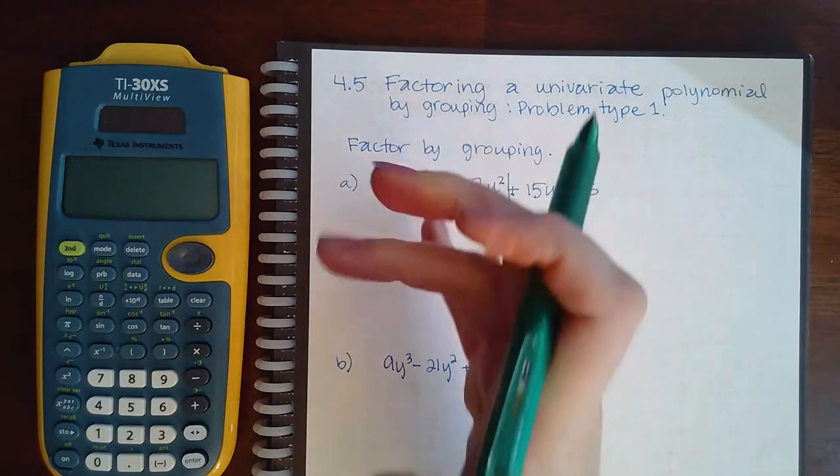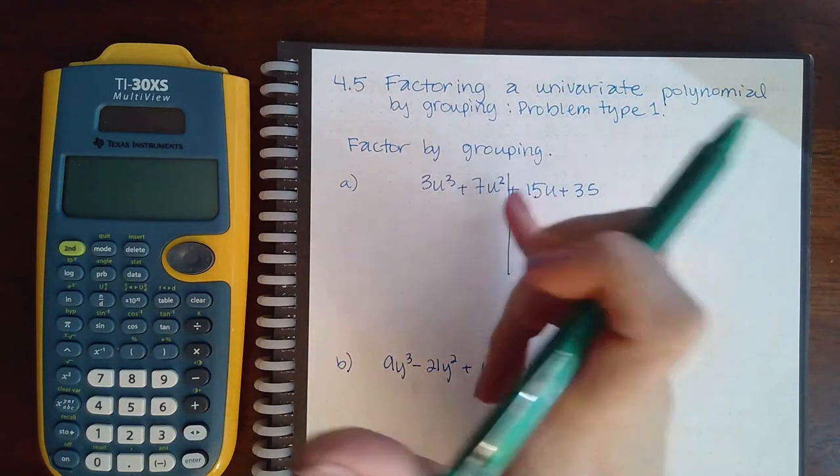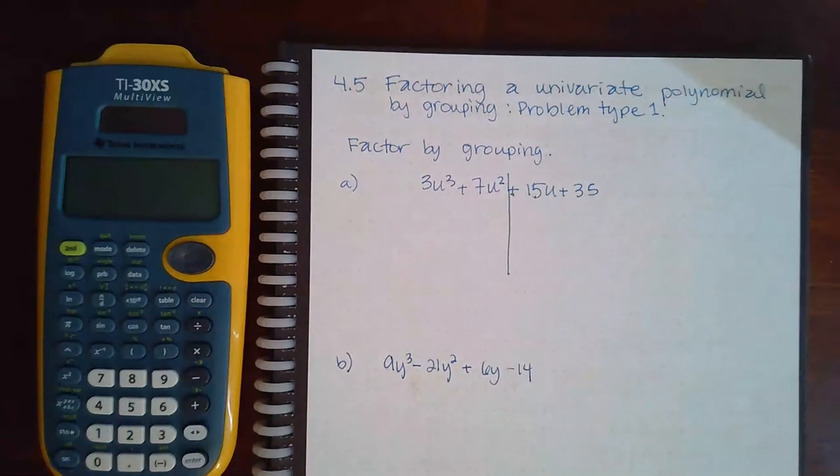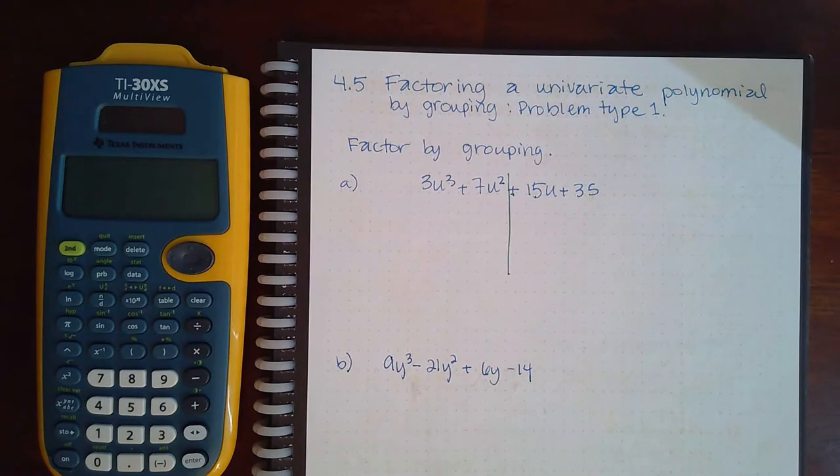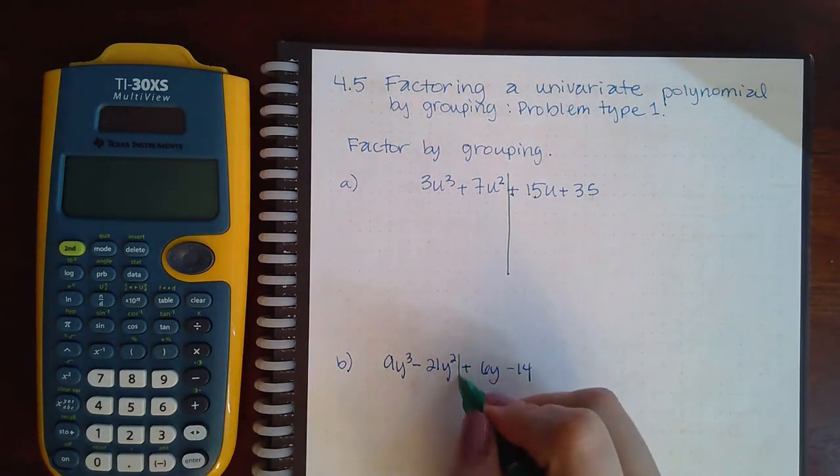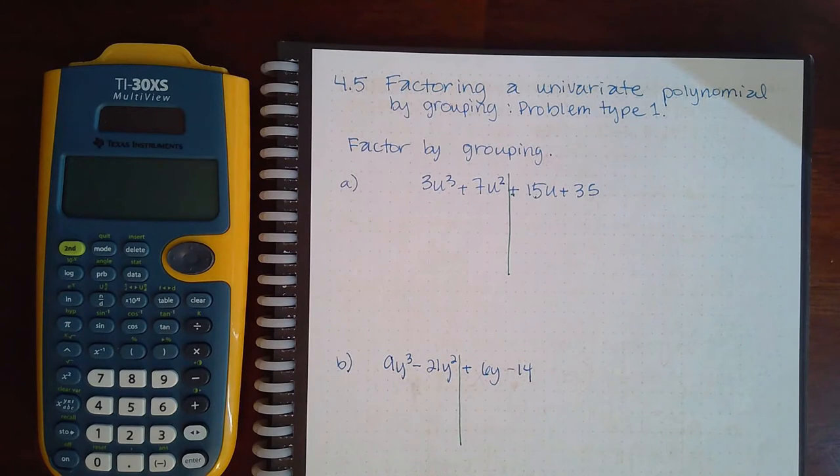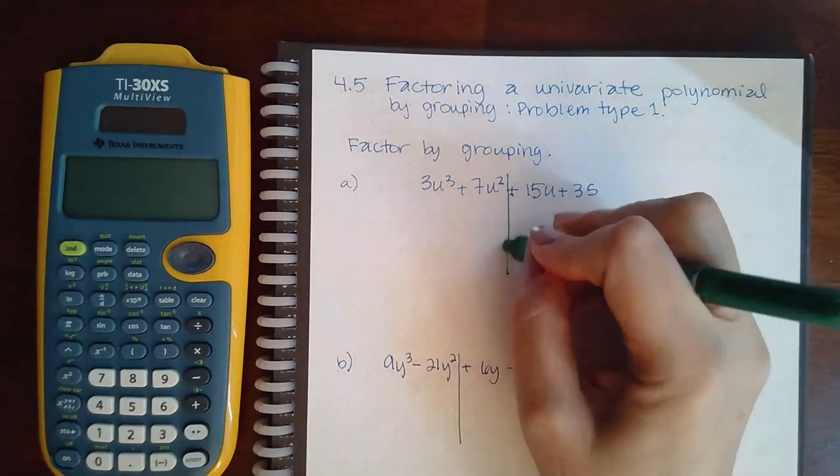So right in there. For this problem I would cut it right in here, and then all you're doing is taking out the GCF of both sides and then ultimately looking at it as a whole again and factoring out the GCF from the entire thing.